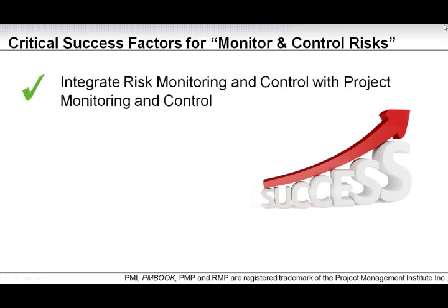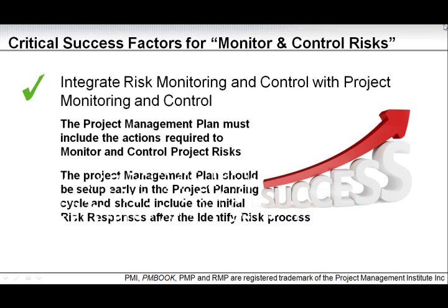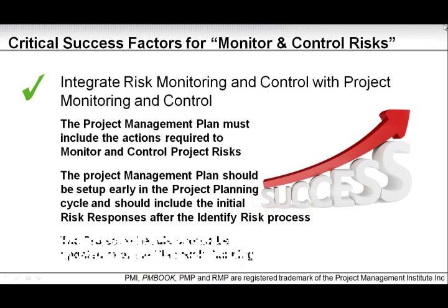Let's look at the success factors one by one. First, integrate risk monitoring and control with project monitoring and control. The project management plan must include the actions required to monitor and control project risks. The project management plan should be set up early in the project planning cycle and should include the initial risk responses after the identified risk process. The project schedule should also be set up early and updated after plan risk planning.